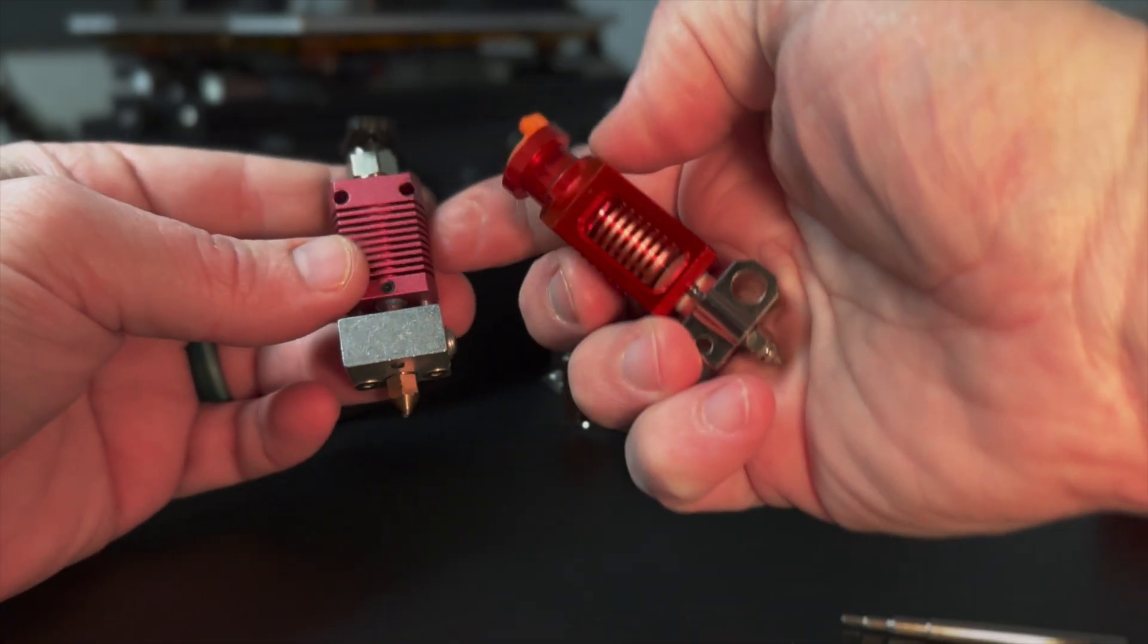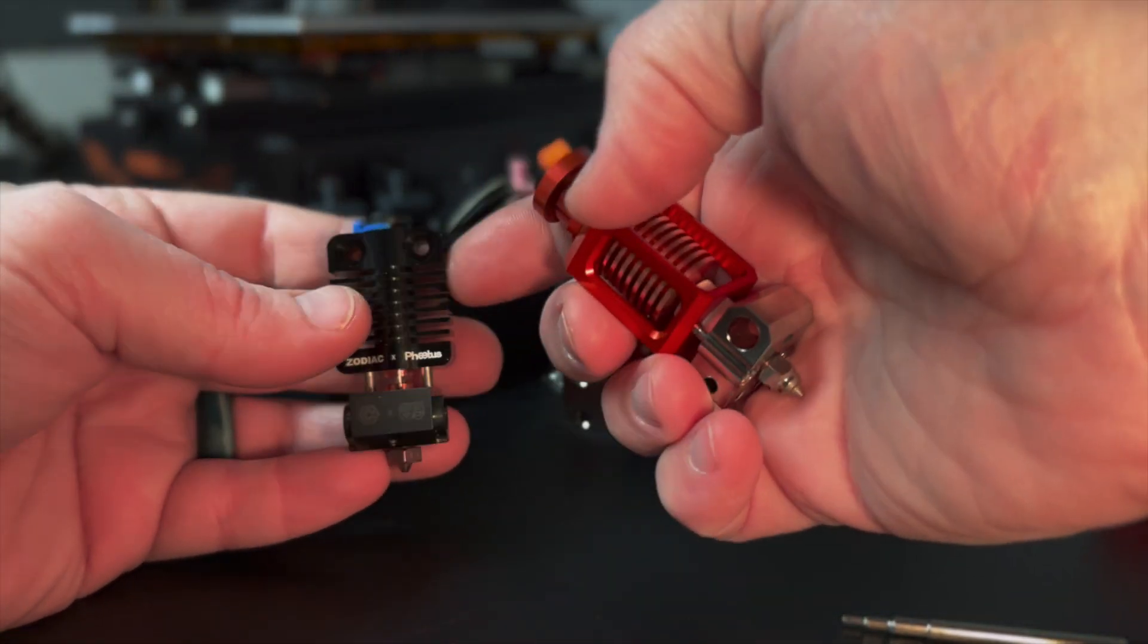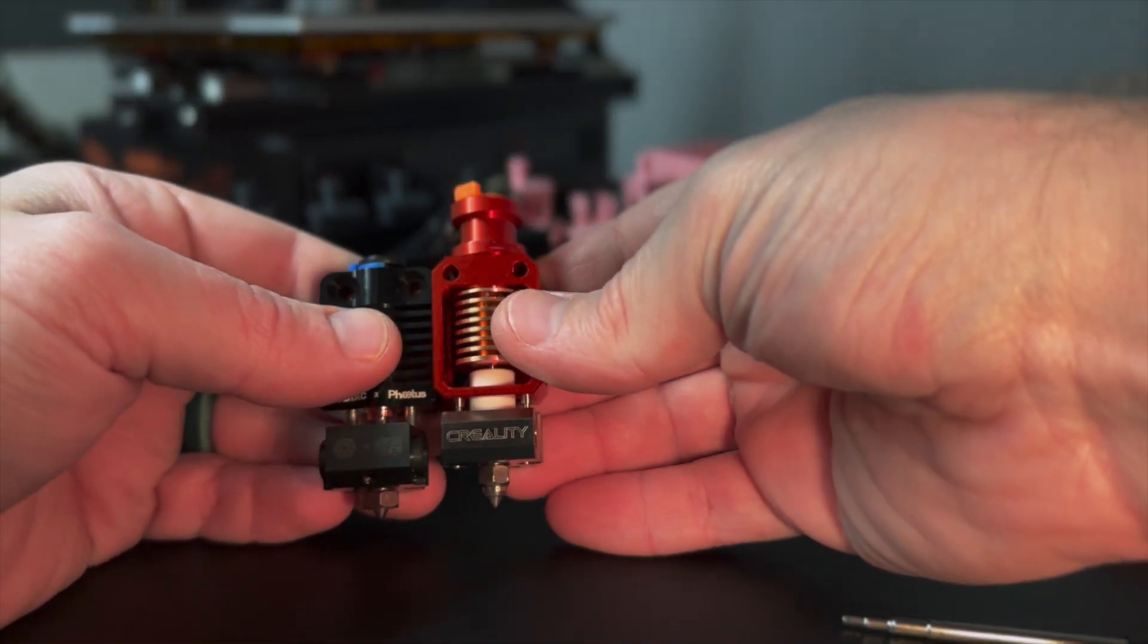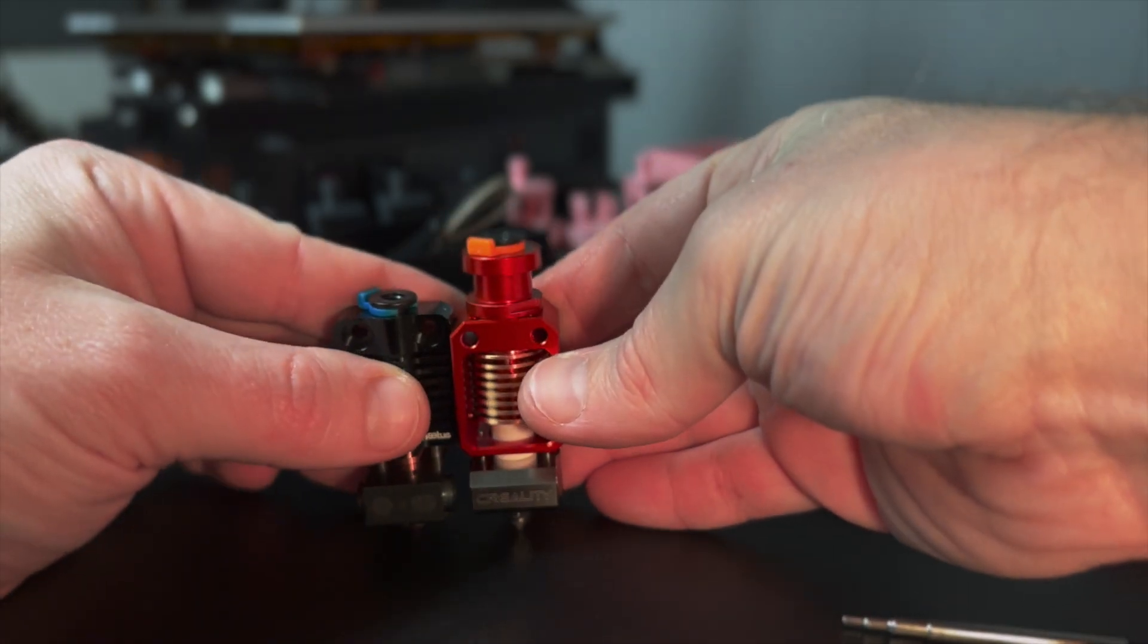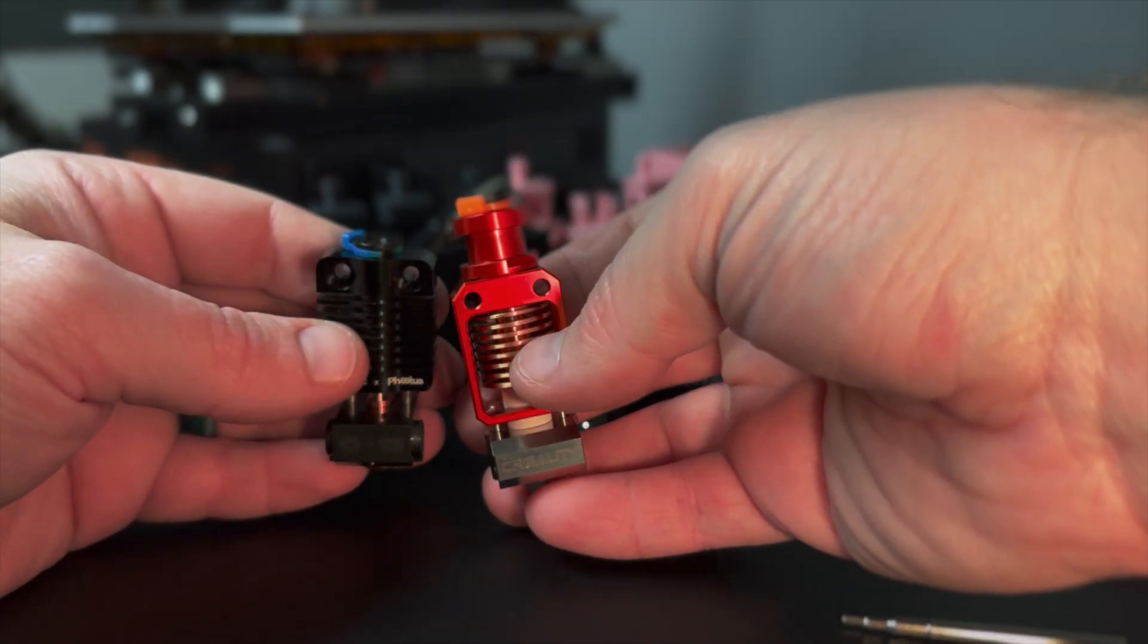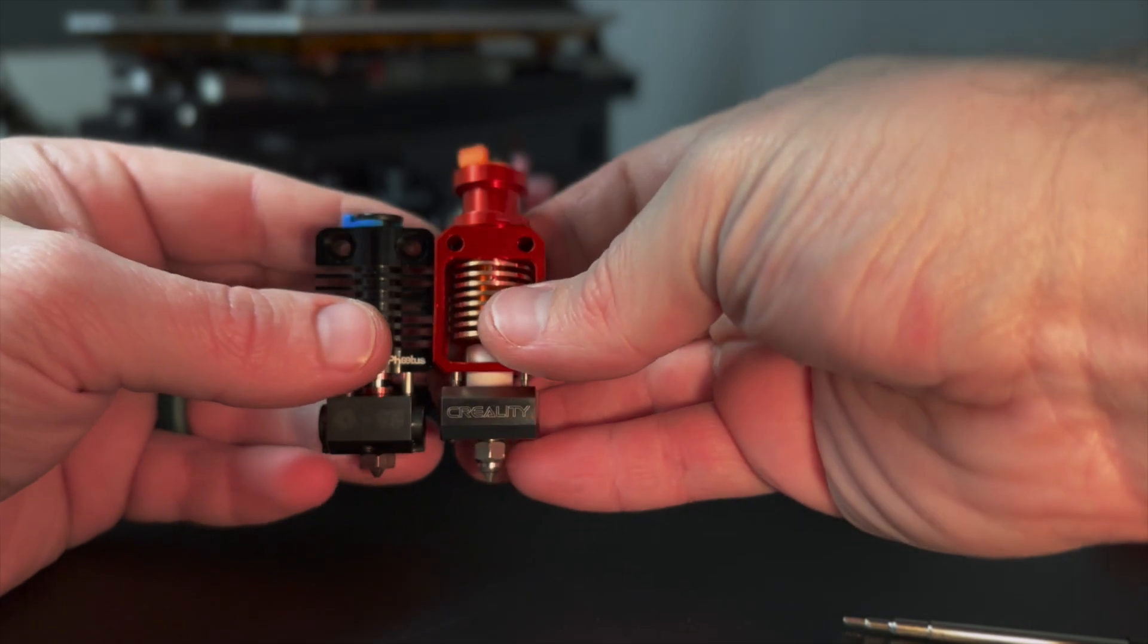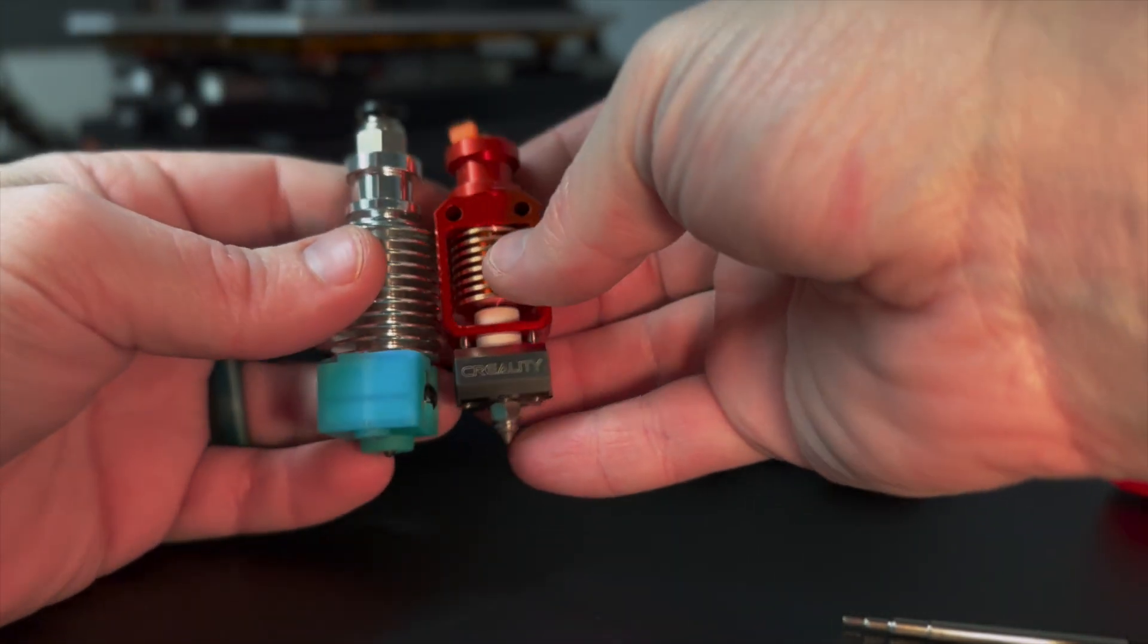Here we have a Phaetus Dragonfly BMS I believe, and it looks identical in size and mounting as this hotend. But one of the other benefits is not only the different metals here used but the different mounting solutions.